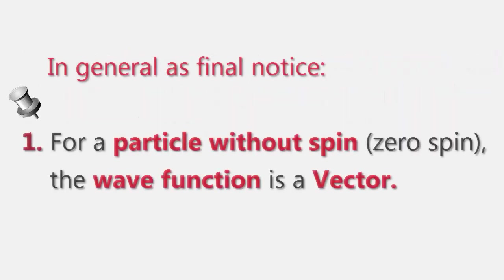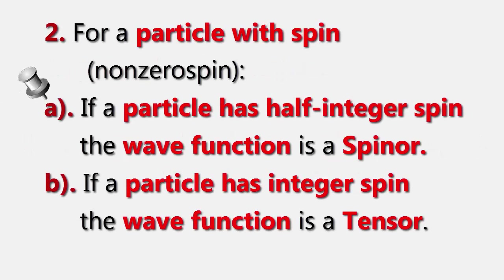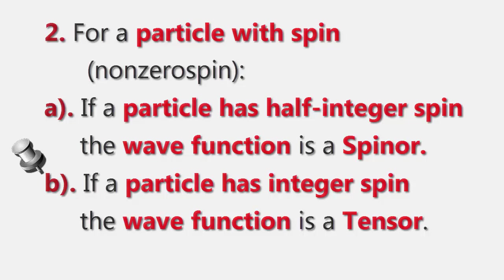In general, as a final notice: 1. For a particle without spin (zero spin), the wave function is a scalar. 2. For a particle with spin (non-zero spin), if the particle has half-integer spin, the wave function is a spinor tensor.